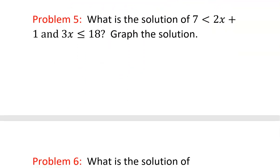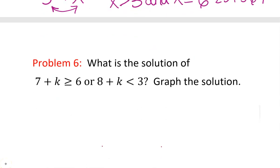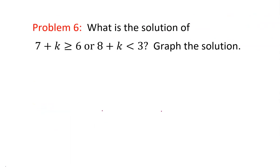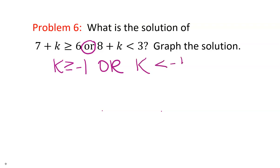Problem number five: what is the solution of this compound inequality with 'and' in the middle, and graph the solution? The next one has 'or' in the middle — with 'or,' we have to include both graphs, and sometimes they overlap, sometimes they go in either direction. For the first part, subtract 7: k is greater than or equal to negative 1. For the second part, subtract 8: k is less than negative 5.